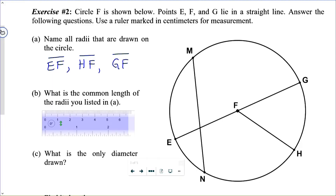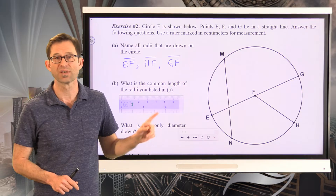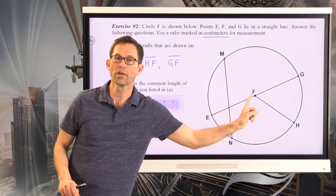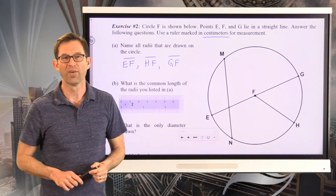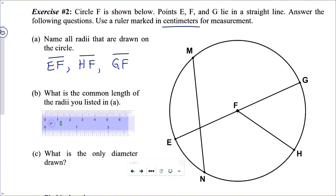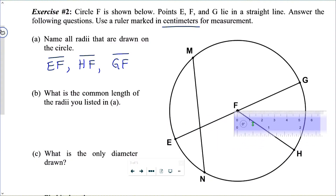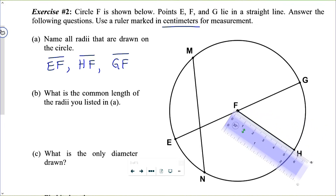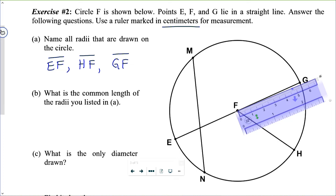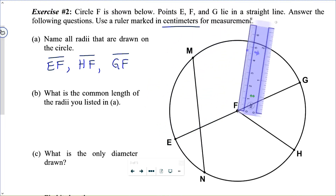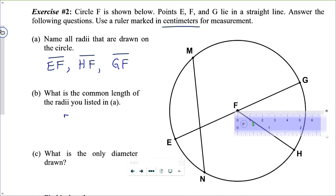Letter B: what is the common length of the radii you listed in part A? We're looking for this in centimeters, so go ahead and take out that ruler and figure out the length of each one of those radii — hopefully they're all the same, but verify it anyway. Taking my ruler and rotating it to each segment, it looks like each radius is five and a half centimeters — 5.5 centimeters.